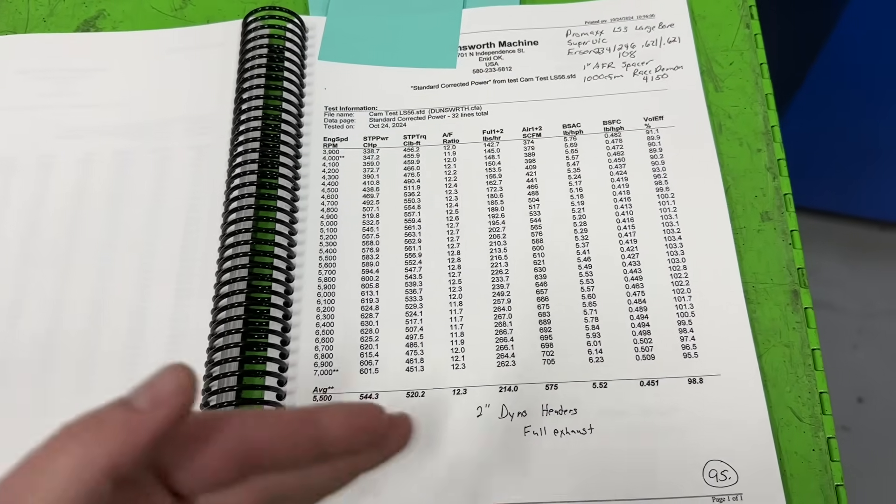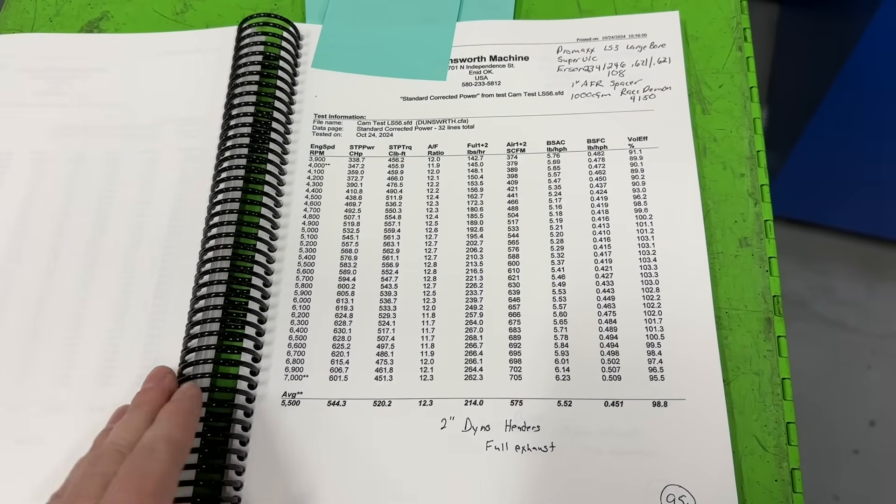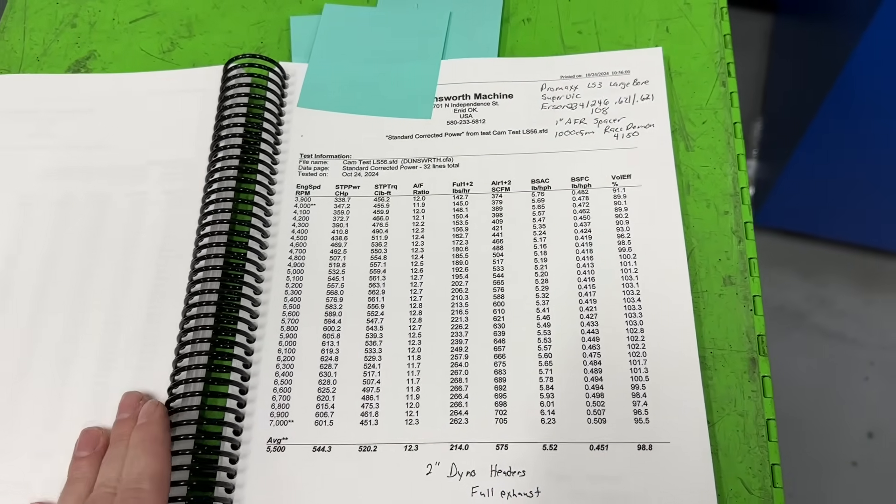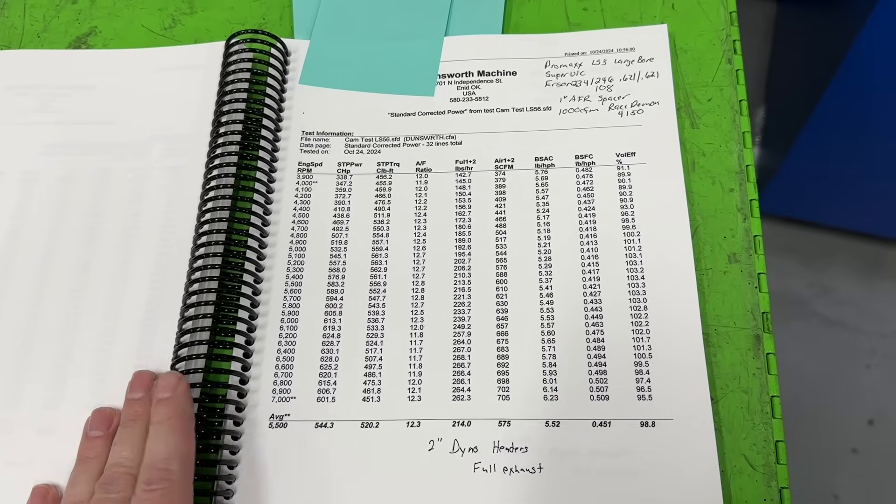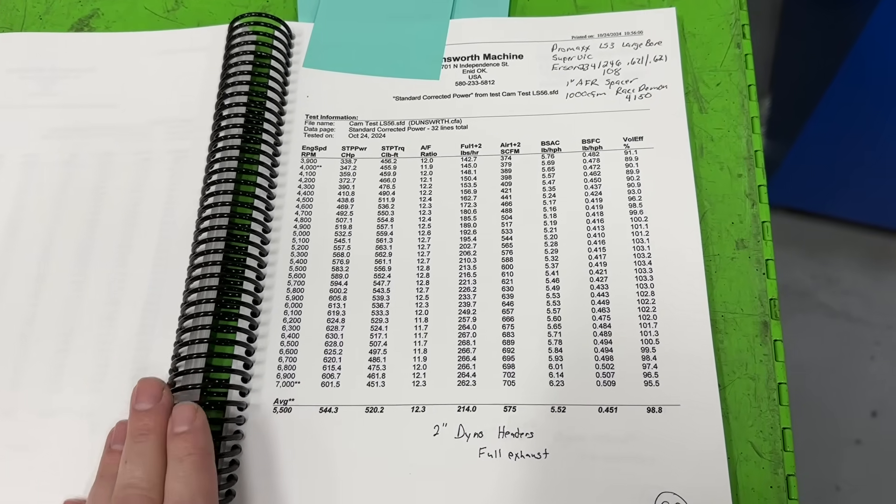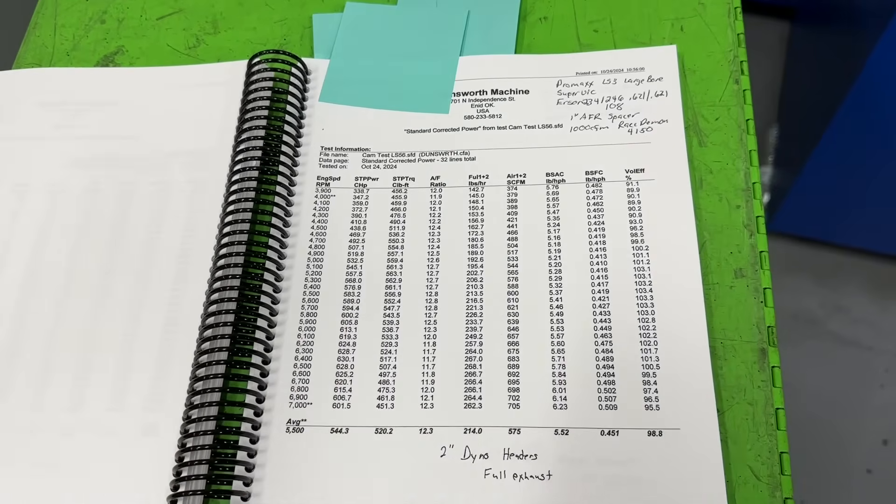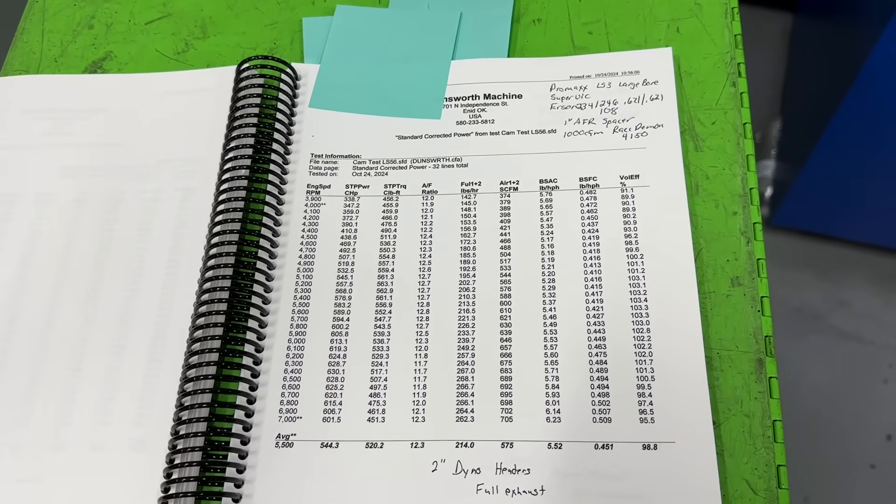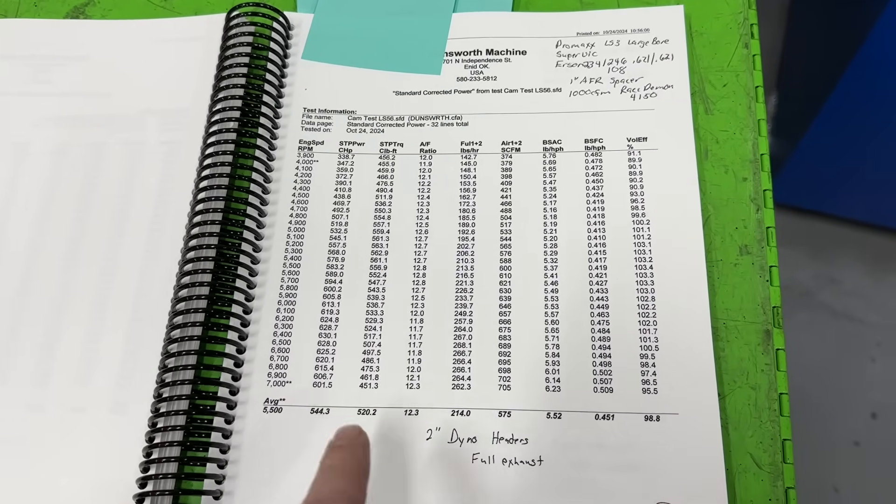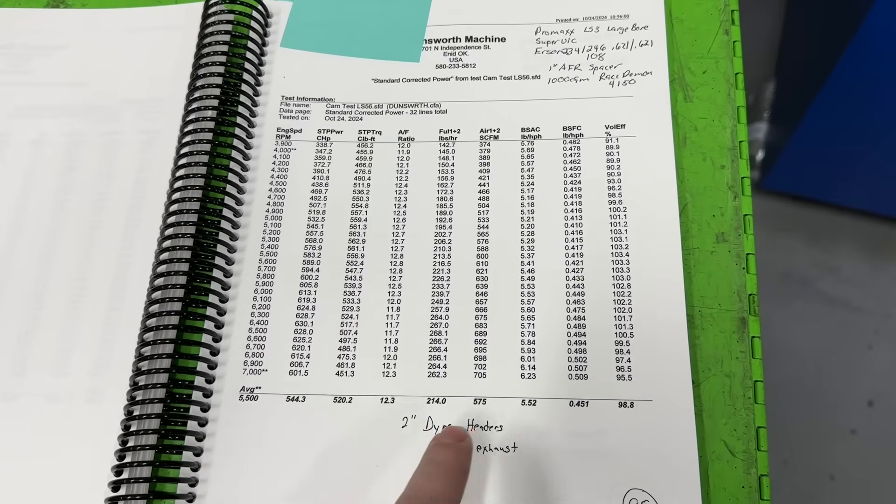If you notice, we have the exhaust system that goes all the way from the header that collects to this large super chamber muffler that the dyno uses to kind of keep things somewhat quieter. So one of the thoughts was, well, it has to be the exhaust system that's causing some weird things and that's why it's losing power.